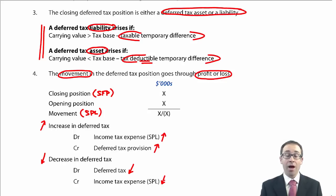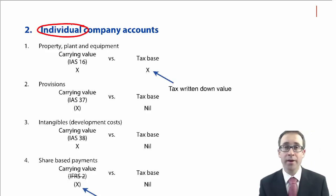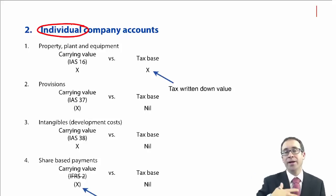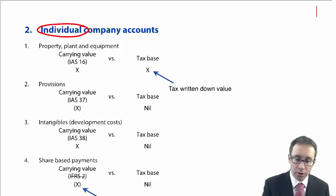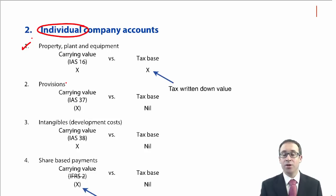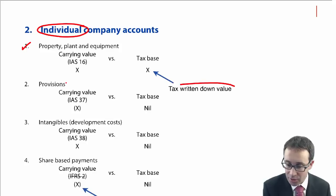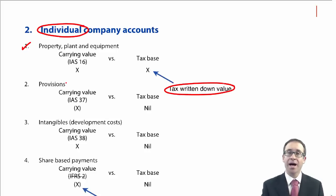Let's look at individual company accounts — what you've seen in F7 — before P2 brings in group scenarios, which will be interesting. For individual company accounts and property, plant and equipment, you take the carrying value under IAS 16 and compare it to the tax base, which is your tax written down value: cost less accumulated capital allowances or accumulated tax depreciation.